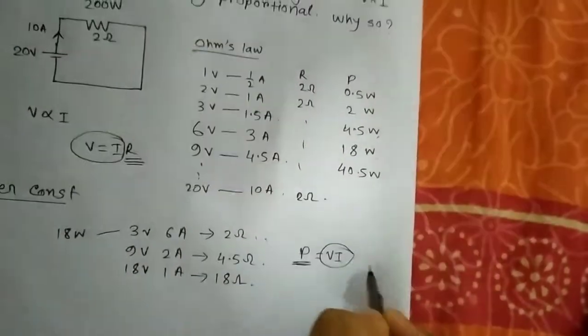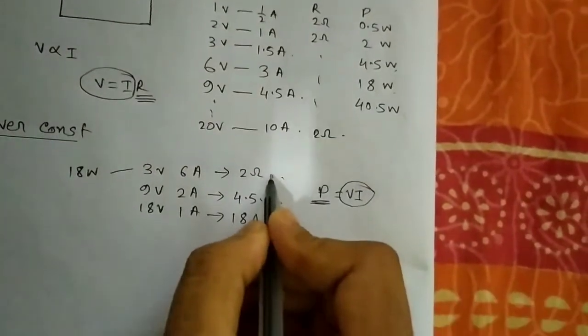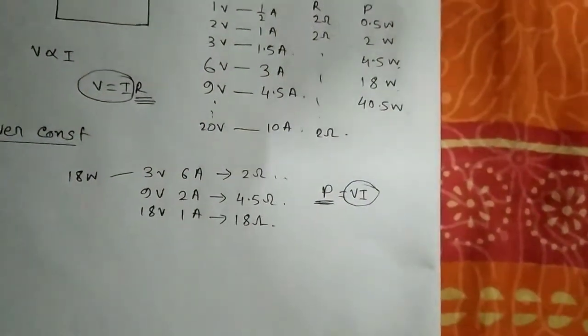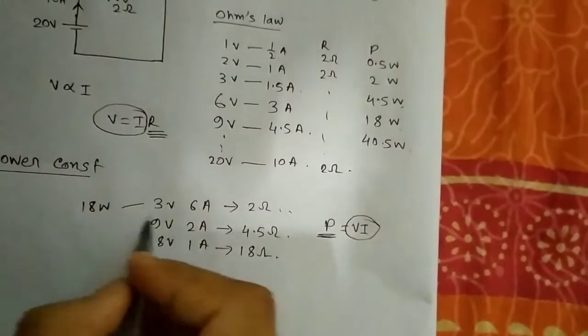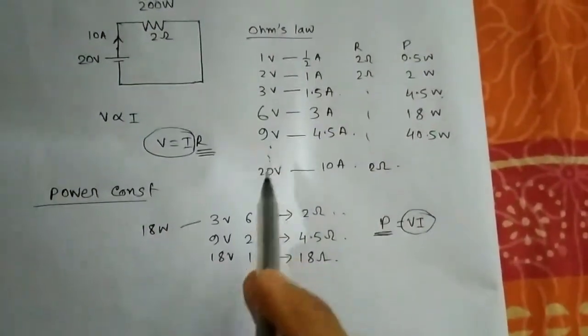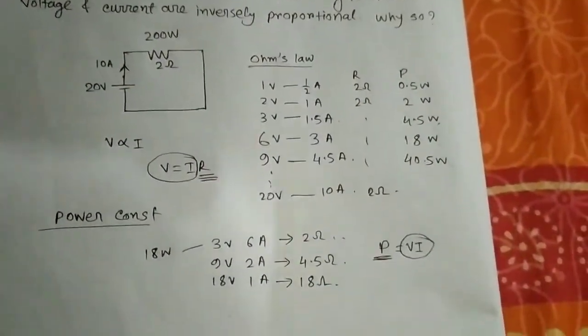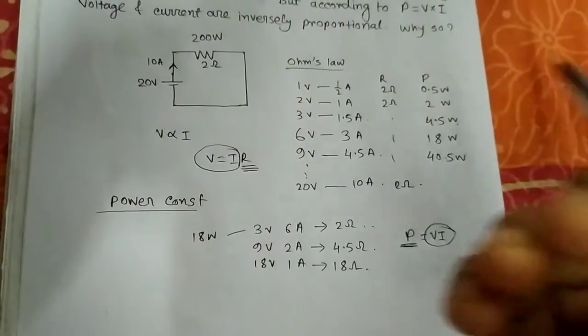As you can see, we are changing this resistance so that in that case, voltage and current will automatically be inversely proportional, not directly proportional.